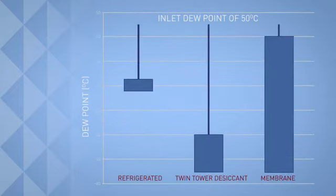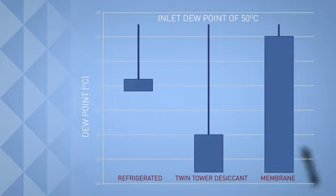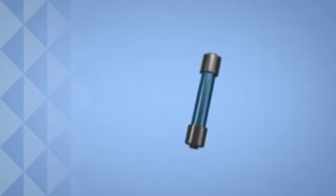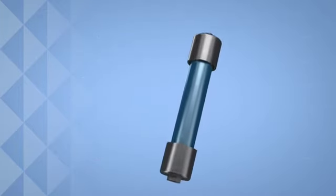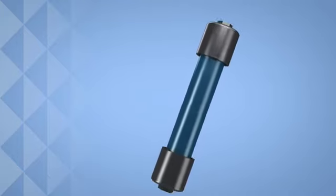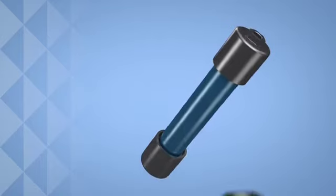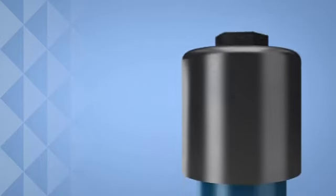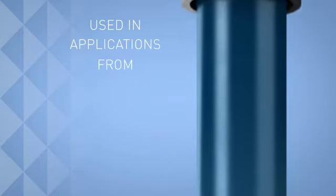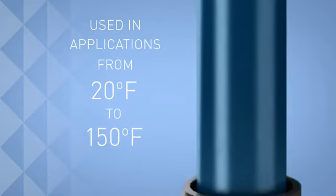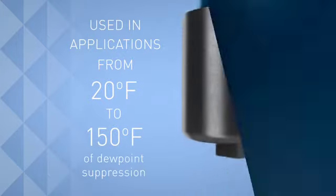Unlike traditional desiccant or refrigerant dryer systems that produce a fixed outlet dew point, Pentair's advanced membrane modules are designed to reduce the incoming air moisture concentration. Dew point suppression can be optimized based on required air quality. Fluid Pro is used in applications ranging from 20 degrees to 150 degrees Fahrenheit of dew point suppression.